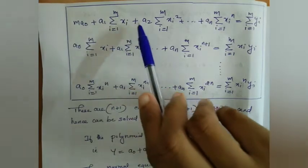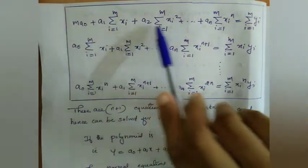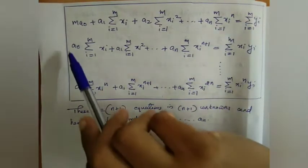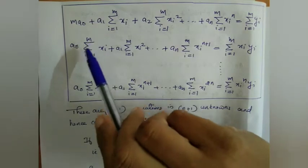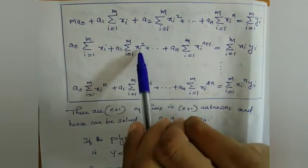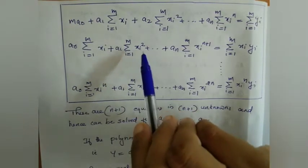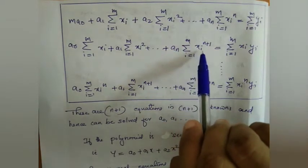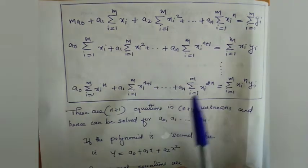The first normal equation corresponds to a0 plus a1x plus a2x squared equals y. The second normal equation is: a0 times summation of xi plus a1 times summation of xi squared, and so on up to an times summation of xi raised to n+1, equals summation of xi·yi.